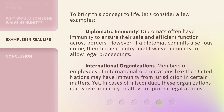To bring this concept to life, let's consider a few examples. Diplomatic immunity: diplomats often have immunity to ensure their safe and efficient function across borders. However, if a diplomat commits a serious crime, their home country might waive immunity to allow legal proceedings. International organizations: members or employees of international organizations like the United Nations may have immunity from jurisdiction in certain matters. Yet, in cases of misconduct, these organizations can waive immunity to allow for proper legal actions.